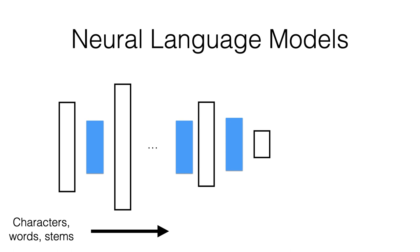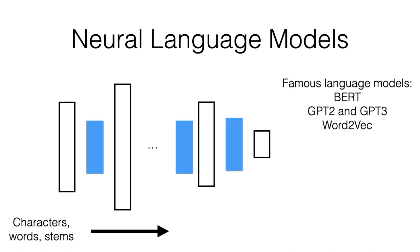Now we'll talk about neural language models, which have been really gaining in power in recent years. Examples include BERT from Google researchers, GPT-2 and GPT-3 from OpenAI, and word2vec. A neural language model is a neural network that takes in raw input and processes it into more and more useful representations, finally arriving at some final output trained to do better and better on a particular task.